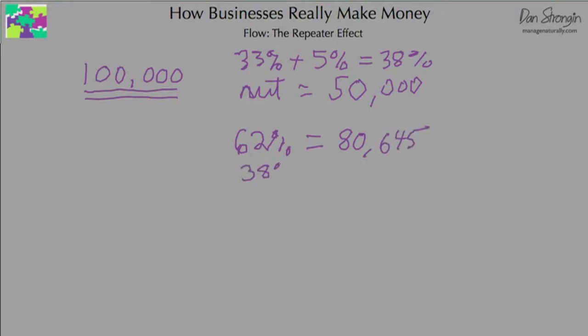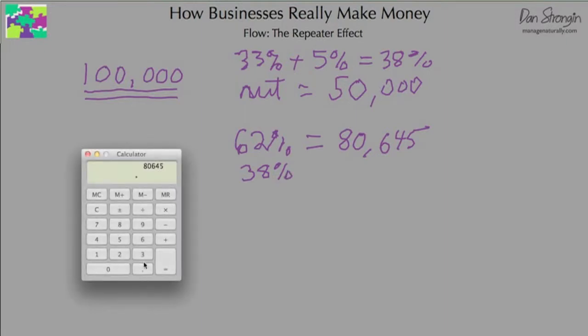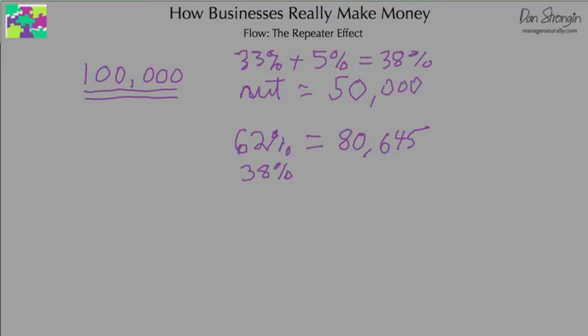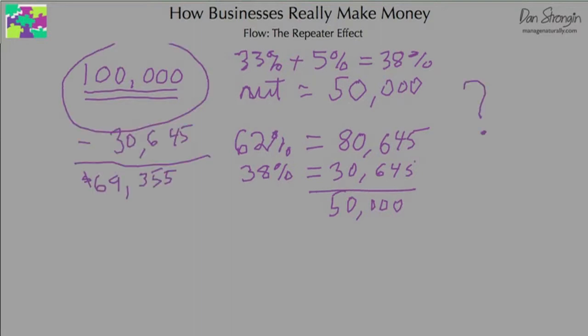Let's pull up the little calculator. So $80,645 times .38 equals $30,645. And that of course leaves the $50,000 that we need to pay our bills. But that $30,645 needs to come from somewhere. So where does it come from? It comes from our working capital.